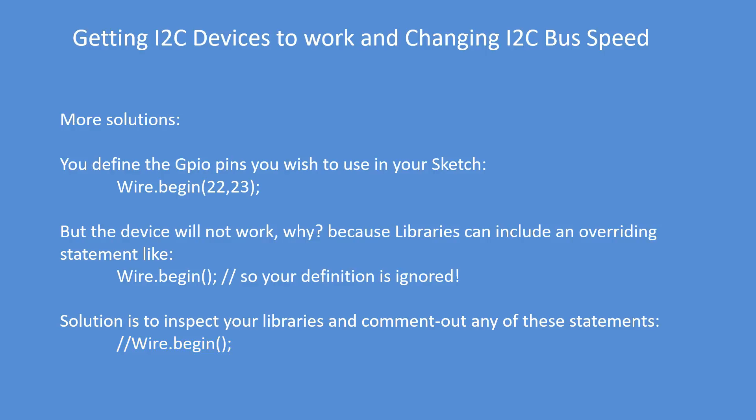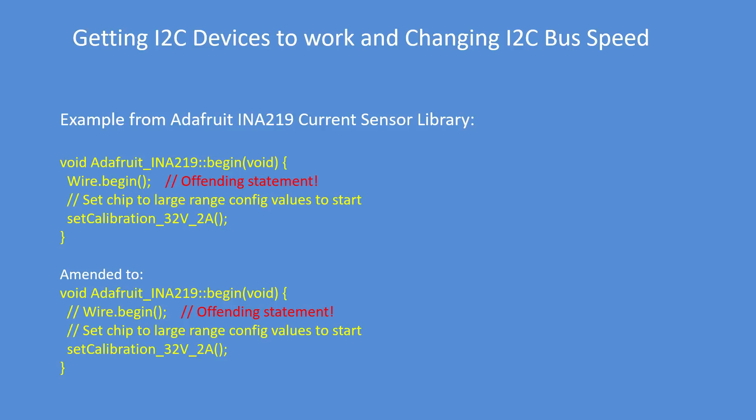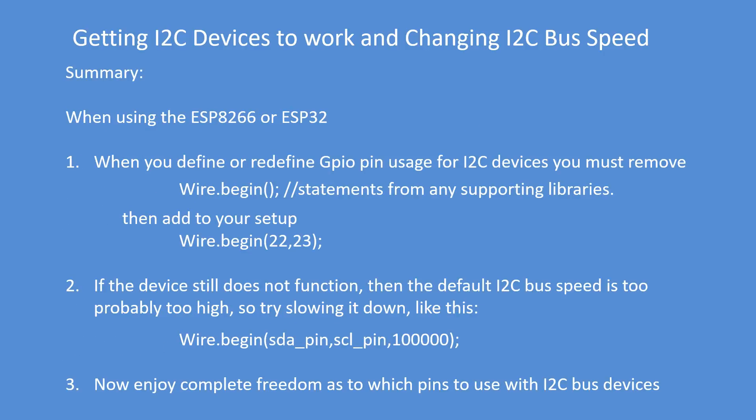Here's an example from the Adafruit INA219 current sensor library. The Wire.begin() call in the library ignores my custom statement, but if I comment it out, the device now works.